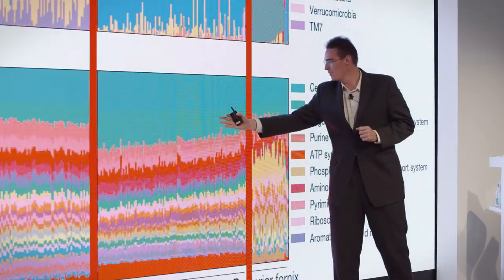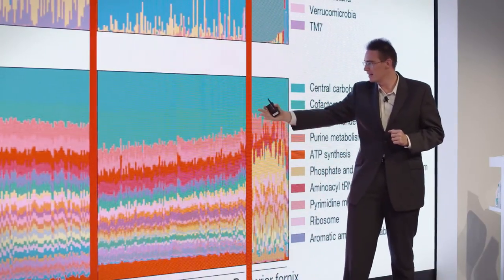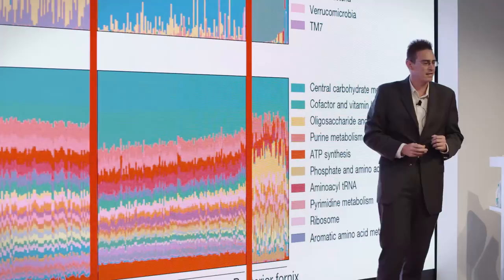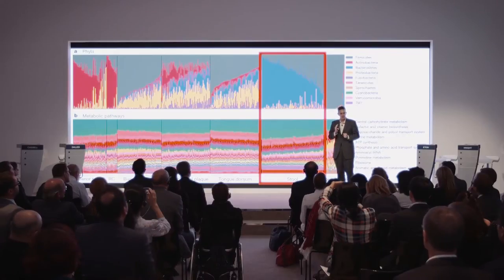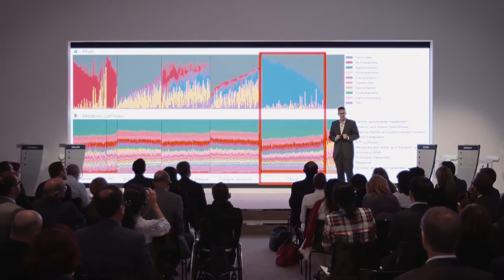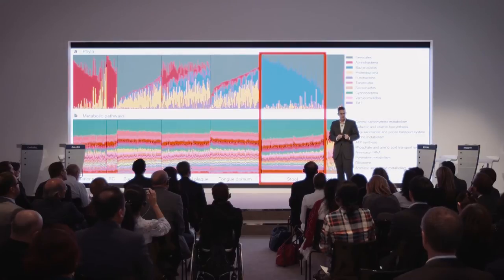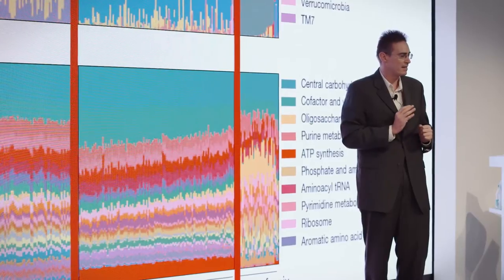Although what was fascinating is that what those microbes actually did, in terms of the functions of the genes they encoded, were very similar person to person. And you can see these profiles are much more consistent. And so what this means is that each of us harbors a completely different species assemblage from the person sitting next to us, which is remarkable when you consider that our human genomes are 99.99% the same.